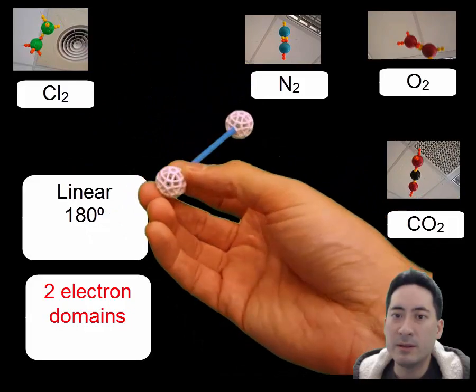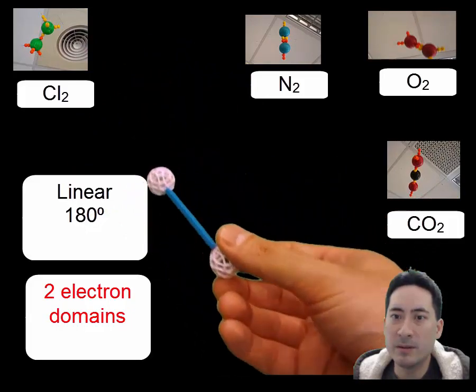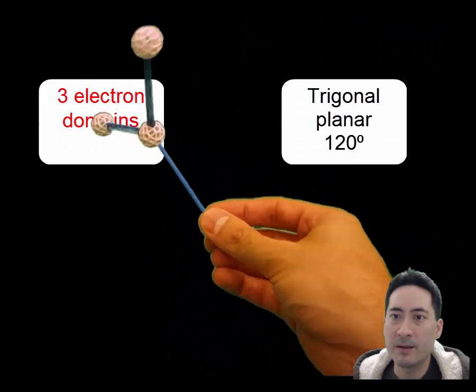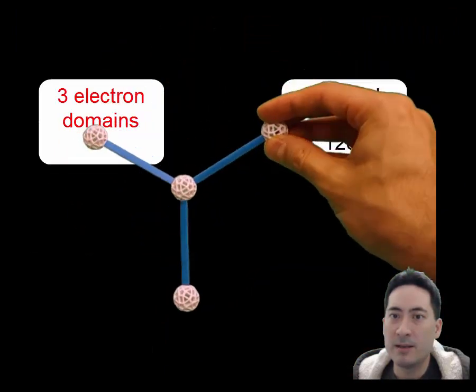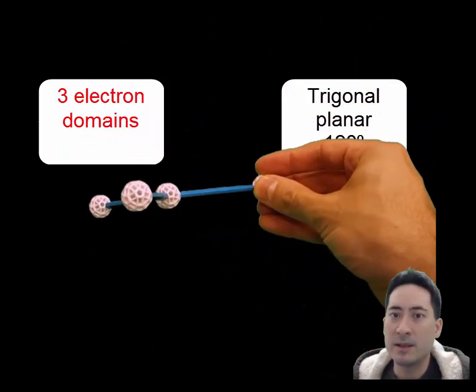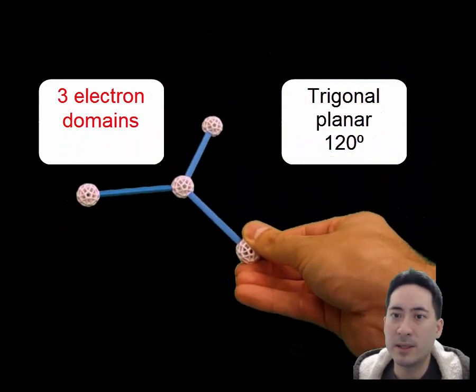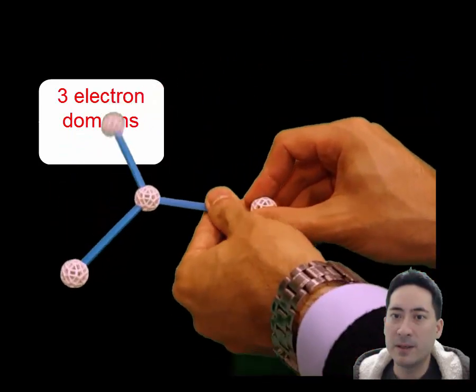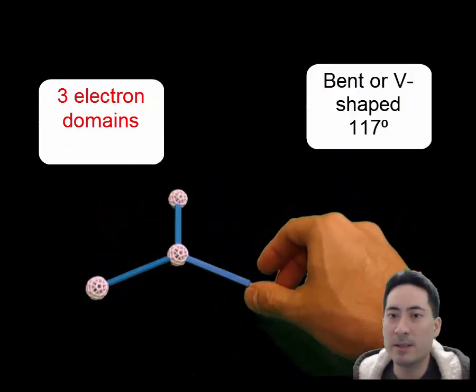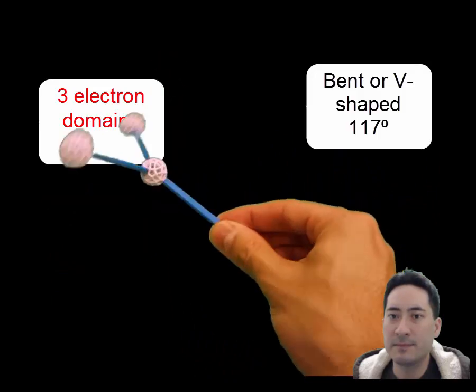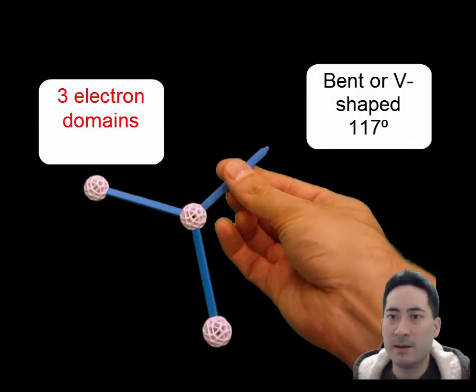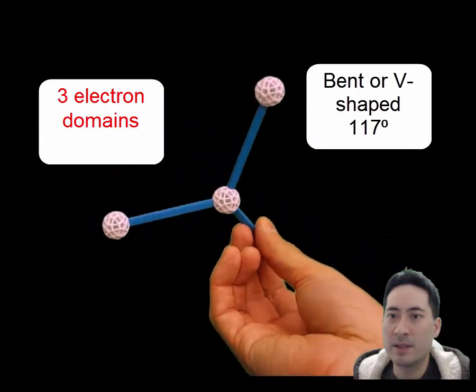So starting with the two electron domains, these are linear molecules. This is a three electron domain, of course trigonal planar. Remove one of those and it becomes bent.